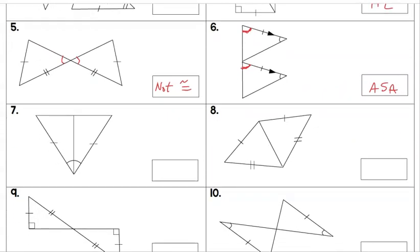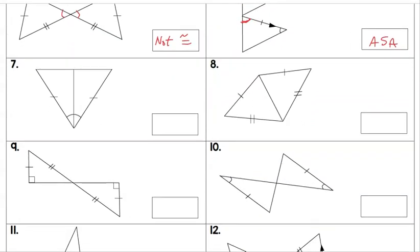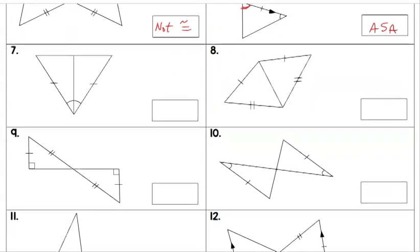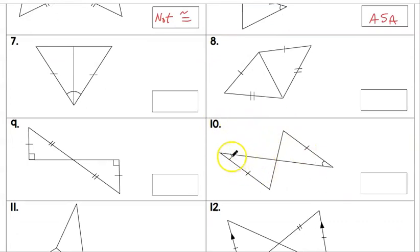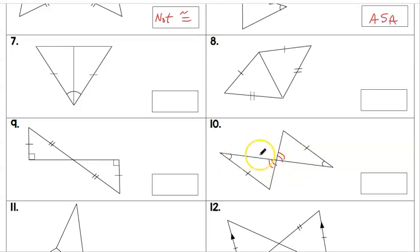For number ten, we have a pair of congruent angles, a pair of congruent sides matching those angles, and this pair would also be congruent. Two pairs of congruent angles and a non-included side that is also marked as congruent — this is what Angle-Angle-Side looks like, so number ten is Angle-Angle-Side.